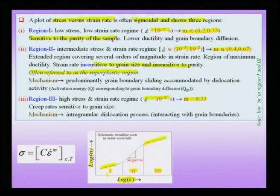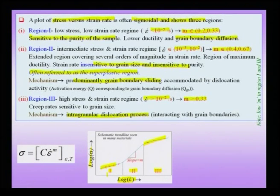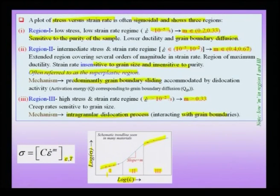The underlying mechanism in region 1 could be grain boundary diffusion; region 2 is predominantly grain boundary sliding accommodated by dislocation activity and some diffusion; and region 3 involves intergranular dislocation processes where dislocations interact with grain boundaries. To summarize: for a superplastic material at constant strain and temperature, we write stress as proportional to strain rate to the power m, where m is the strain rate sensitivity. A high m gives large superplastic elongation — this corresponds to the middle region of the curve.